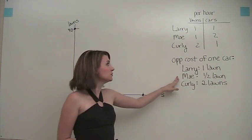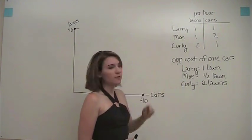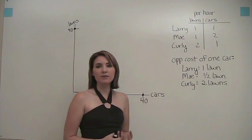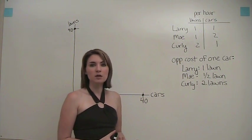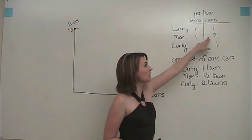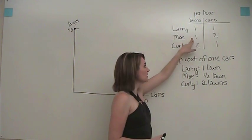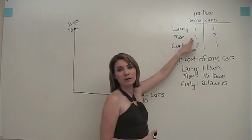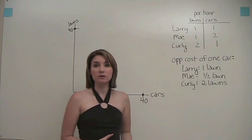Let's move on to Moe. In order for Moe to wash one car, he only has to give up mowing half of a lawn. So his opportunity cost of washing a car is just half of a lawn, because he's better at washing cars, since he can do two of those per hour, than he is at mowing lawns, since he can only do one of those per hour.